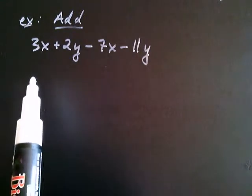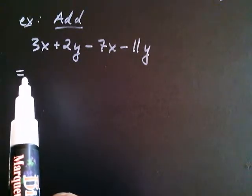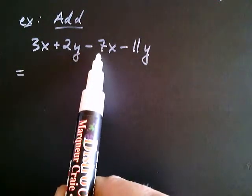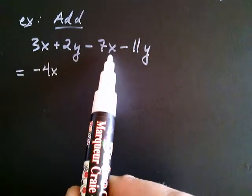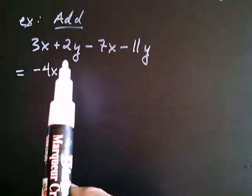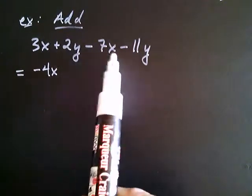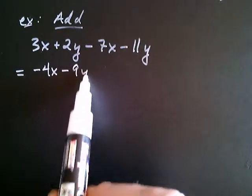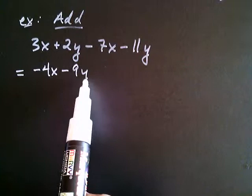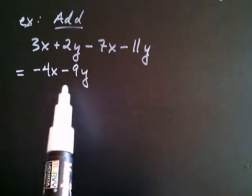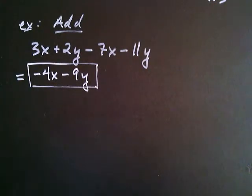So the first thing we do is ask ourselves: are there any like terms? And there are — 3x and negative 7x are like terms. We add those together by adding their coefficients: 3 plus negative 7 is negative 4, and we keep the x. Let's go on to the y's. This term is like that term because they both have y raised to the first power. I add the coefficients: positive 2 and negative 11 gives negative 9y. Now clearly, negative 4x is not like negative 9y — the bases aren't even the same, so they're clearly not like terms. In the next video, we'll talk about why you combine like terms the way you do, and we'll also do some more complicated examples involving fractions.